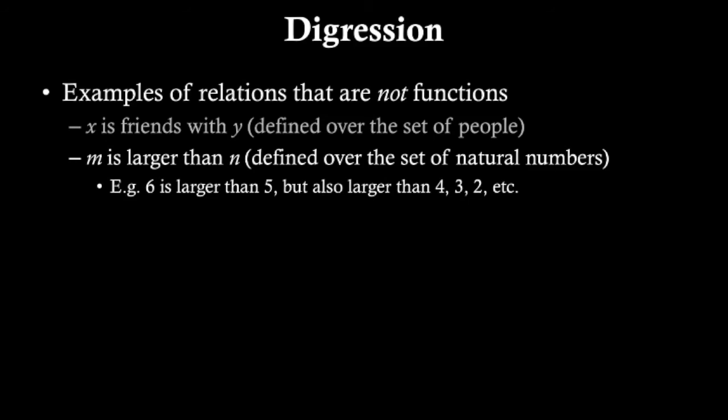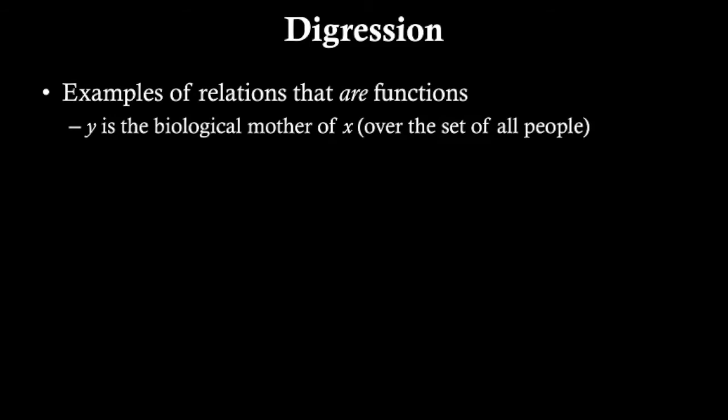On the other hand, we also have examples of relations that are functions. Functions can range over all sorts of things. They don't have to be numbers. For instance, over the set of all people, Y is the biological mother of X is a function, ignoring issues of surrogate mothers, because every person only has one biological mother.